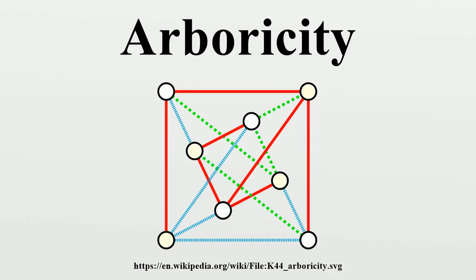Example: The figure shows a complete bipartite graph K4,4, with the colors indicating a partition of its edges into three forests. K4,4 cannot be partitioned into fewer forests, because any forest on its eight vertices has at most seven edges, while the overall graph has 16 edges — more than double the number of edges in a single forest. Therefore, the arboricity of K4,4 is 3.